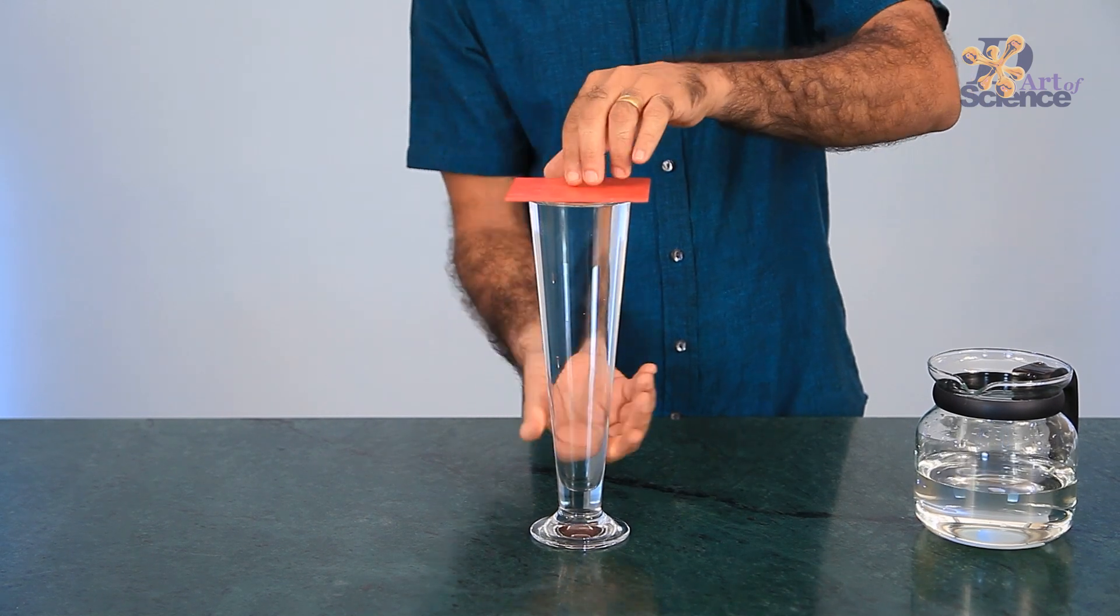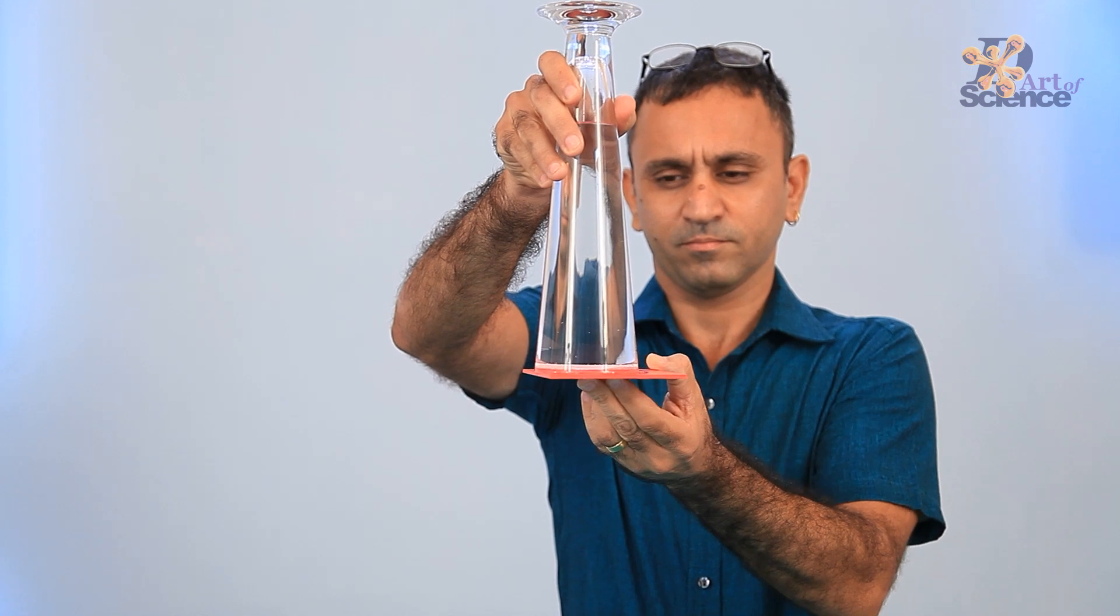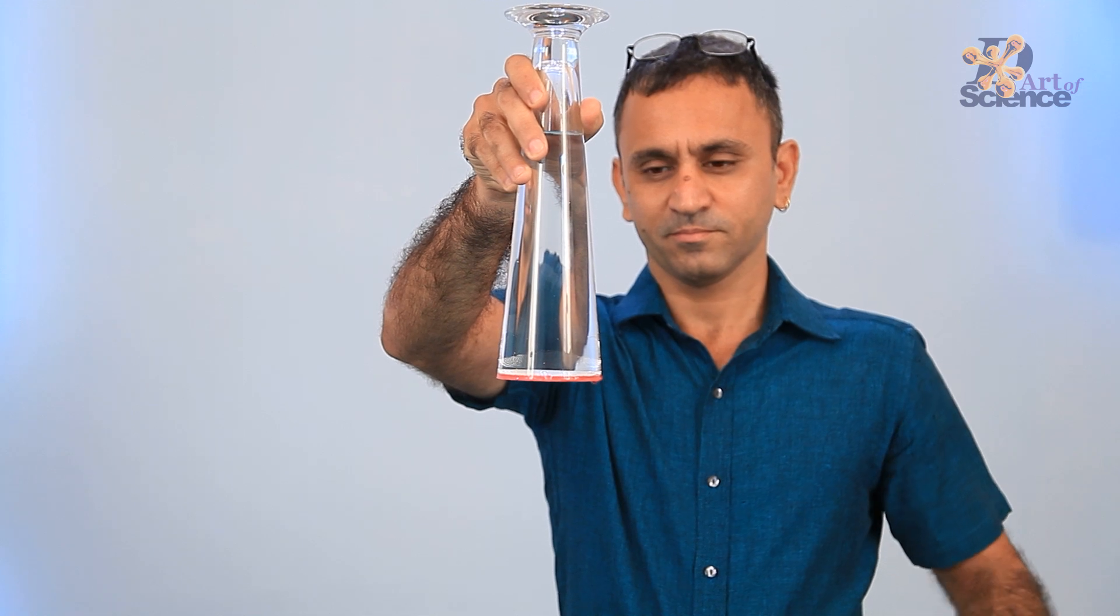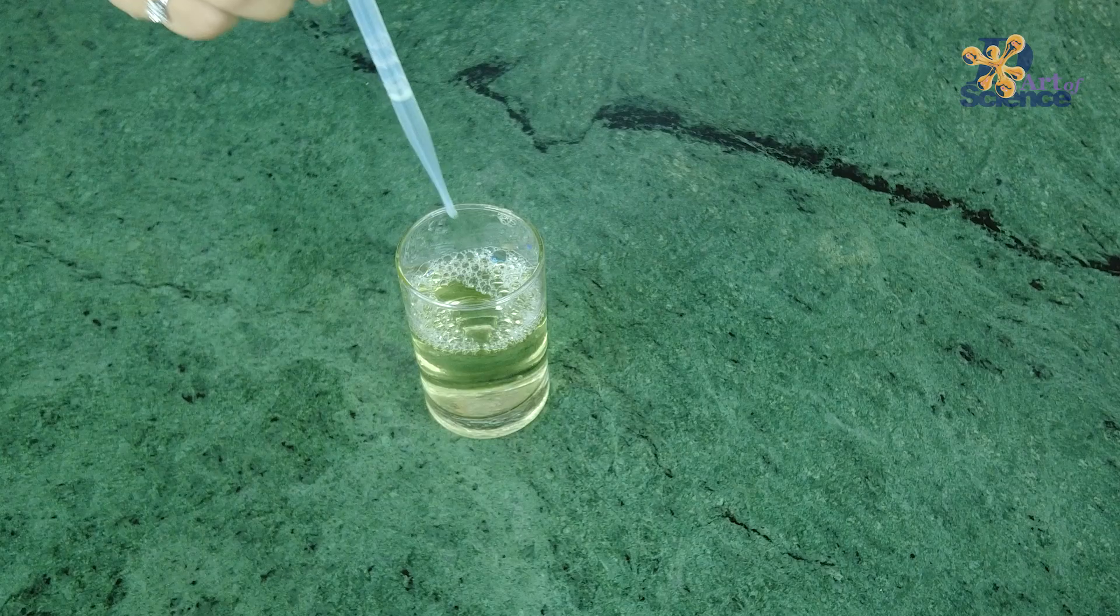And you can use this to perform an amazing trick. The glass is upside down and yet the water doesn't fall out because of surface tension. I've linked the video up here.